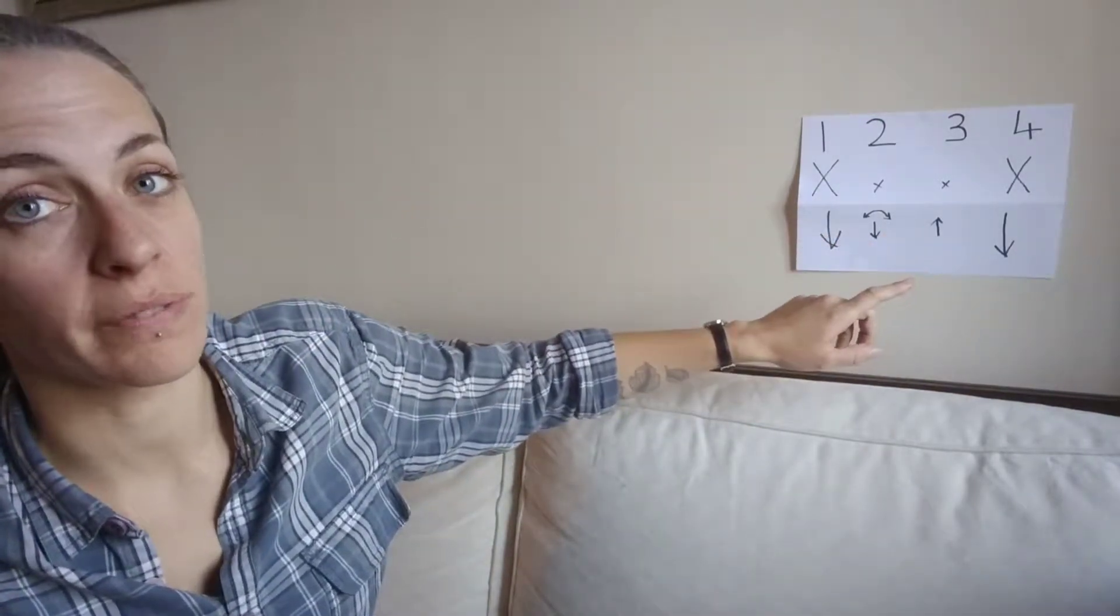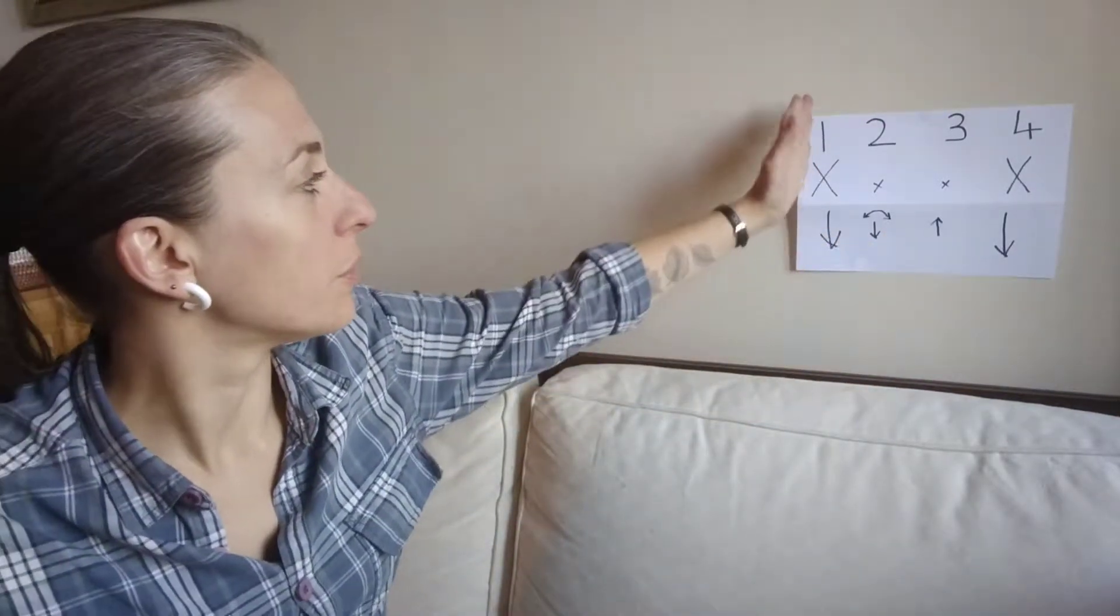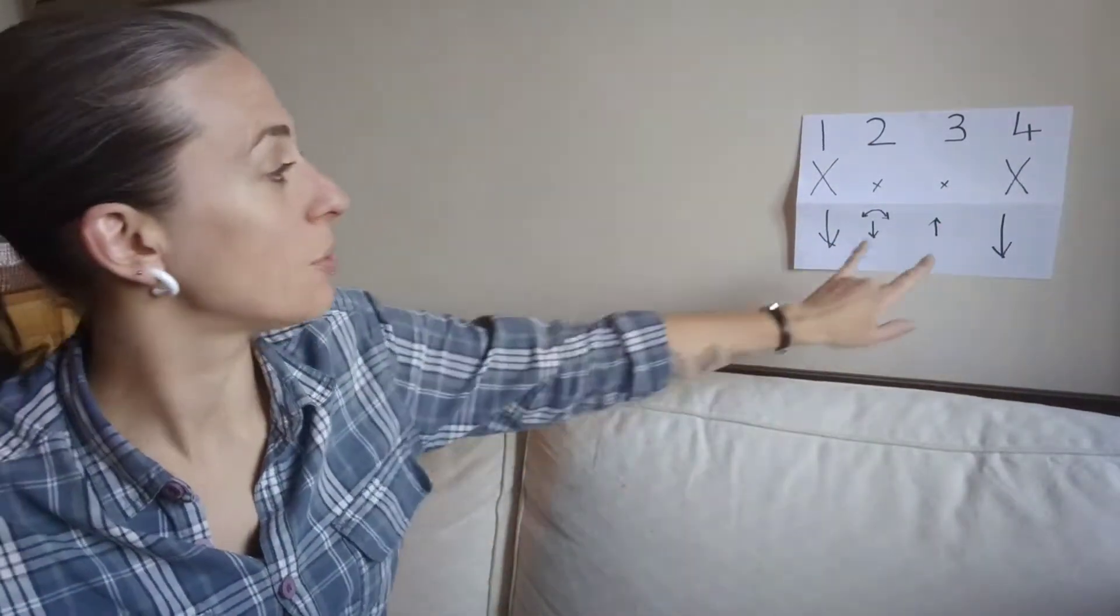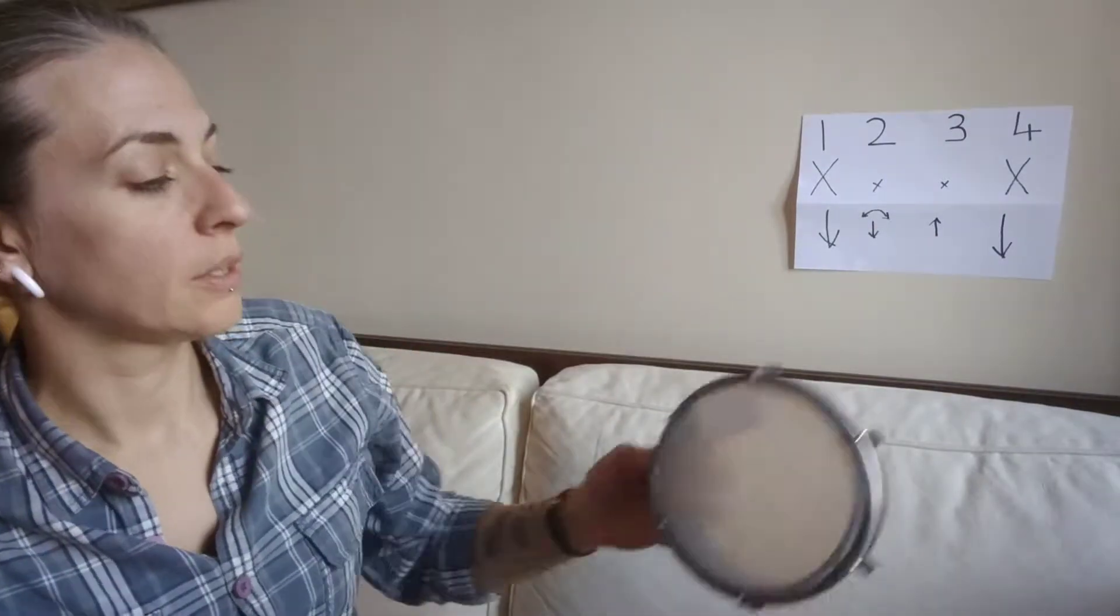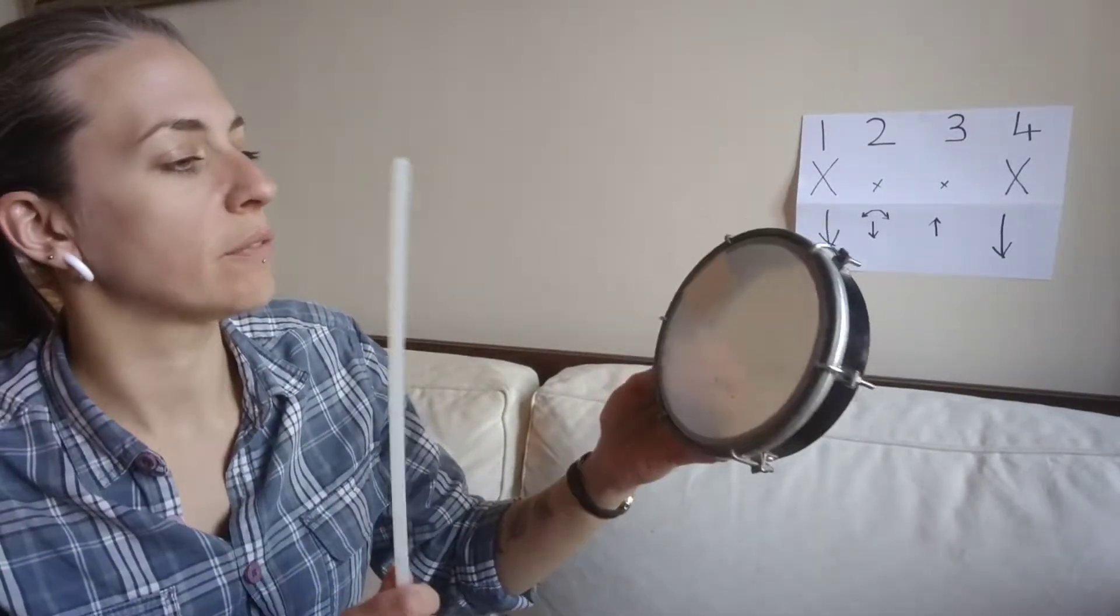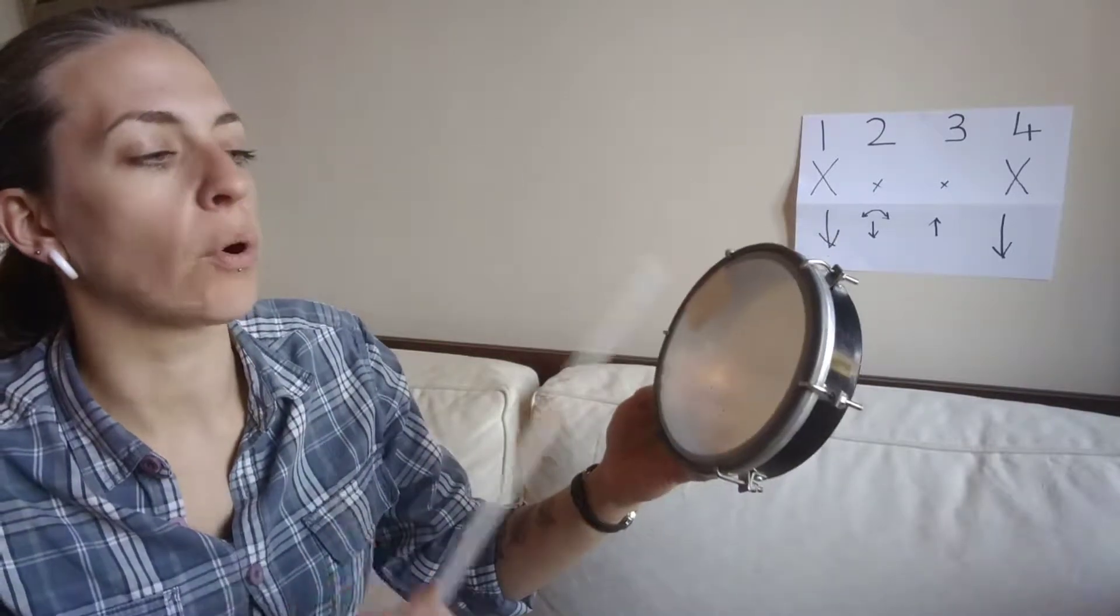You've got to be able to play this quite fast, so we're going to work up to that. The first and the fourth are the loud ones, and the two in the middle are quiet. It's important to remember that. So it's 1, 2, 3, 4, 1, 2, 3, 4, 1, 2, 3, 4, 1.